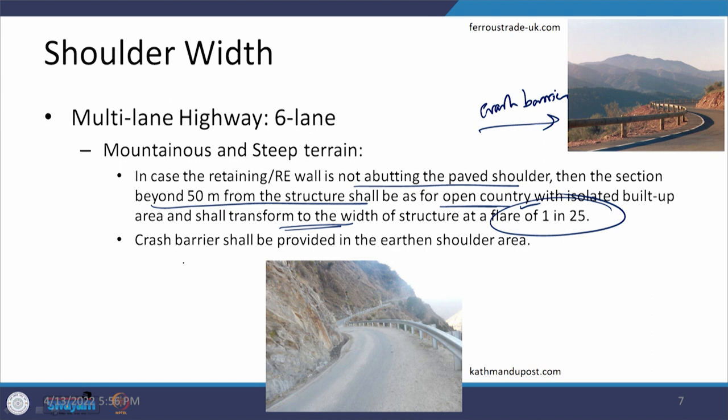Another provision is that the crash barrier shall be provided in the earthen shoulder area. As visible in the photograph, the earthen shoulder area has a crash barrier provided on it — again as a safety measure towards the valley side.